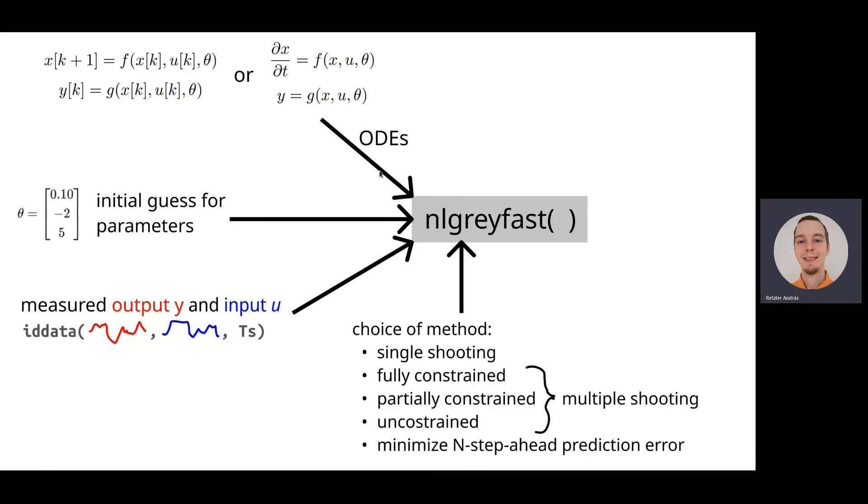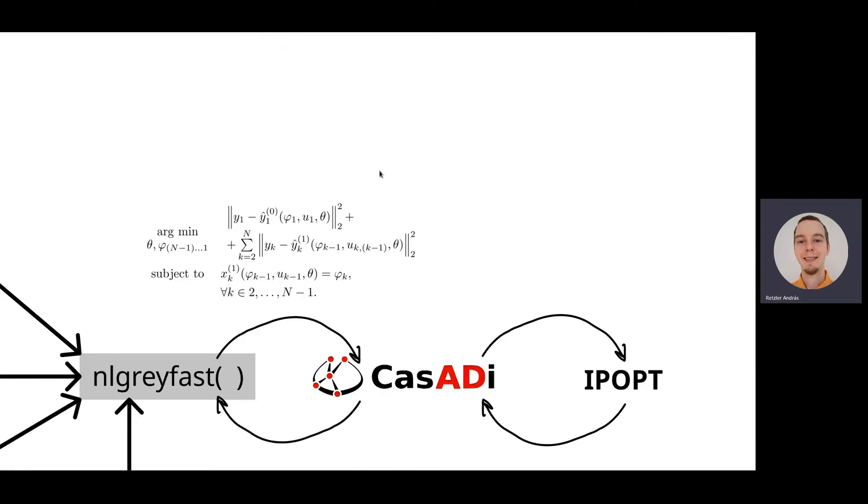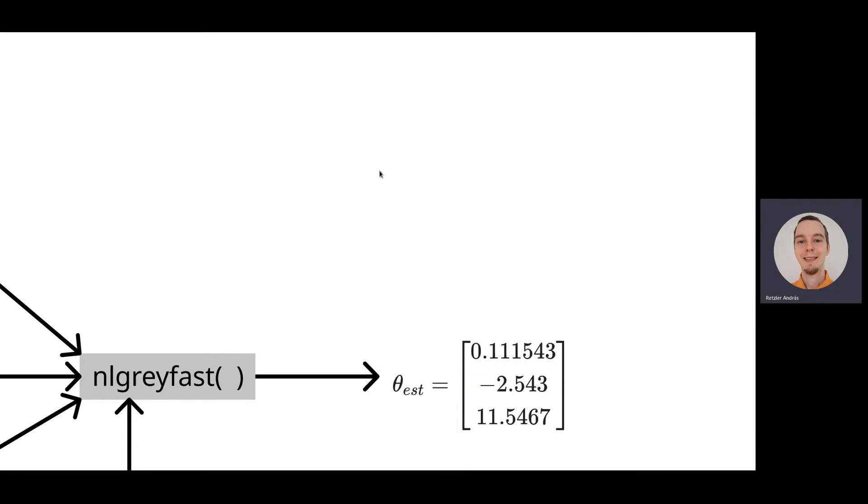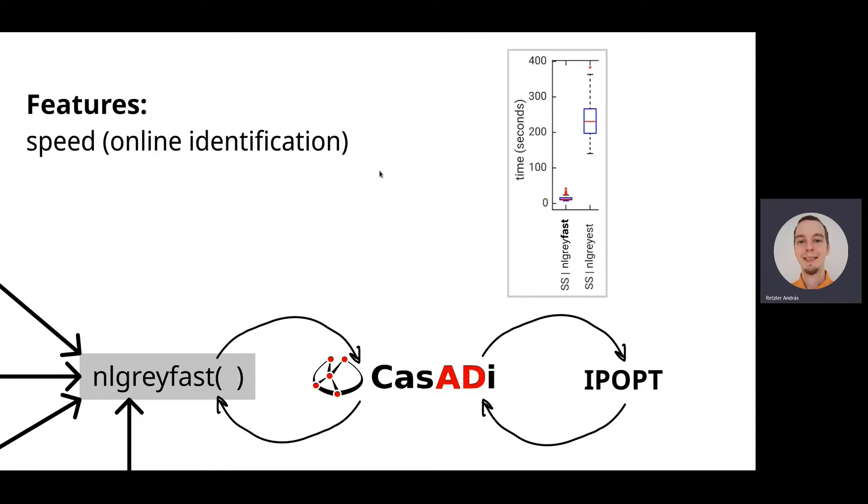So if you give it some ODEs of the system, and all these that depend on the theta parameters here, and you also give it some initial guess for these parameters, and you give it the measured outputs and inputs, and you choose a method out of those that are available. I will go into those in detail later. Then it formulates an optimization problem using a tool called Casadi, and solves it using the NLP solver called IPopt, in order to give you a parameter estimate. And basically, the features of it, or how is it different?